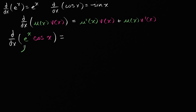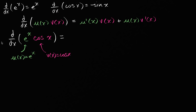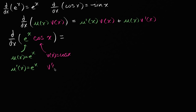I color coded intentionally so we can say that u of x is equal to e to the x, and v of x is equal to cosine of x. If u of x is equal to e to the x, we know that the derivative with respect to x is still e to the x — that's one of the most magical things in mathematics, one of the things that makes e so special. So u prime of x is still equal to e to the x, and v prime of x is negative sine of x.